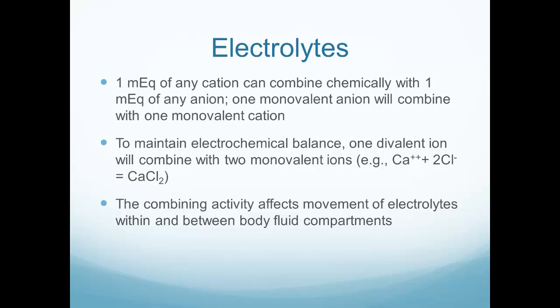One milliequivalent of any cation — which is positively charged — can combine chemically with one milliequivalent of any anion — which is negatively charged. One positive charge and one negative charge neutralize each other. For example, calcium might combine with a couple of chloride ions to form calcium chloride.